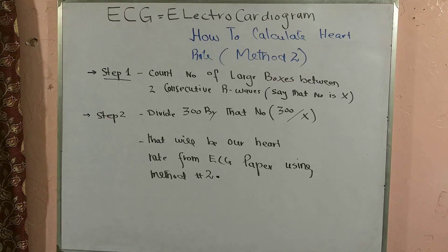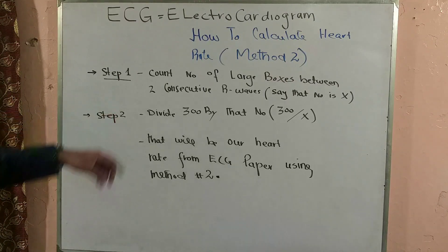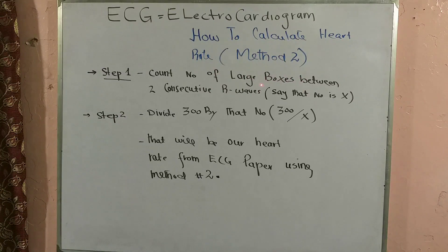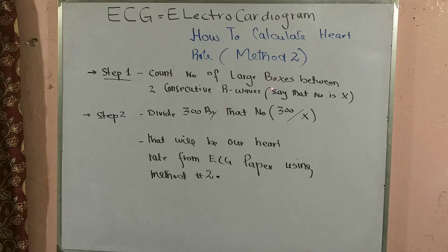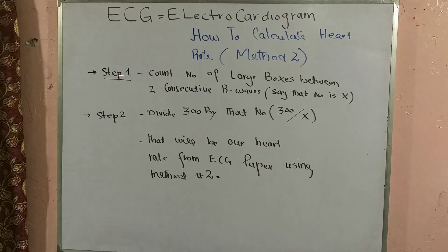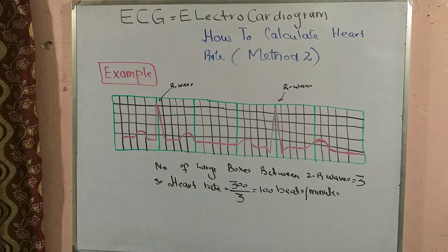Method 2 is a two-step method. In Step 1, we count the number of large boxes between two consecutive R waves — let's call that number X. In Step 2, we divide 300 (a fixed digit) by that number X. So the heart rate equals 300 divided by X, the number of large boxes between two consecutive R waves.